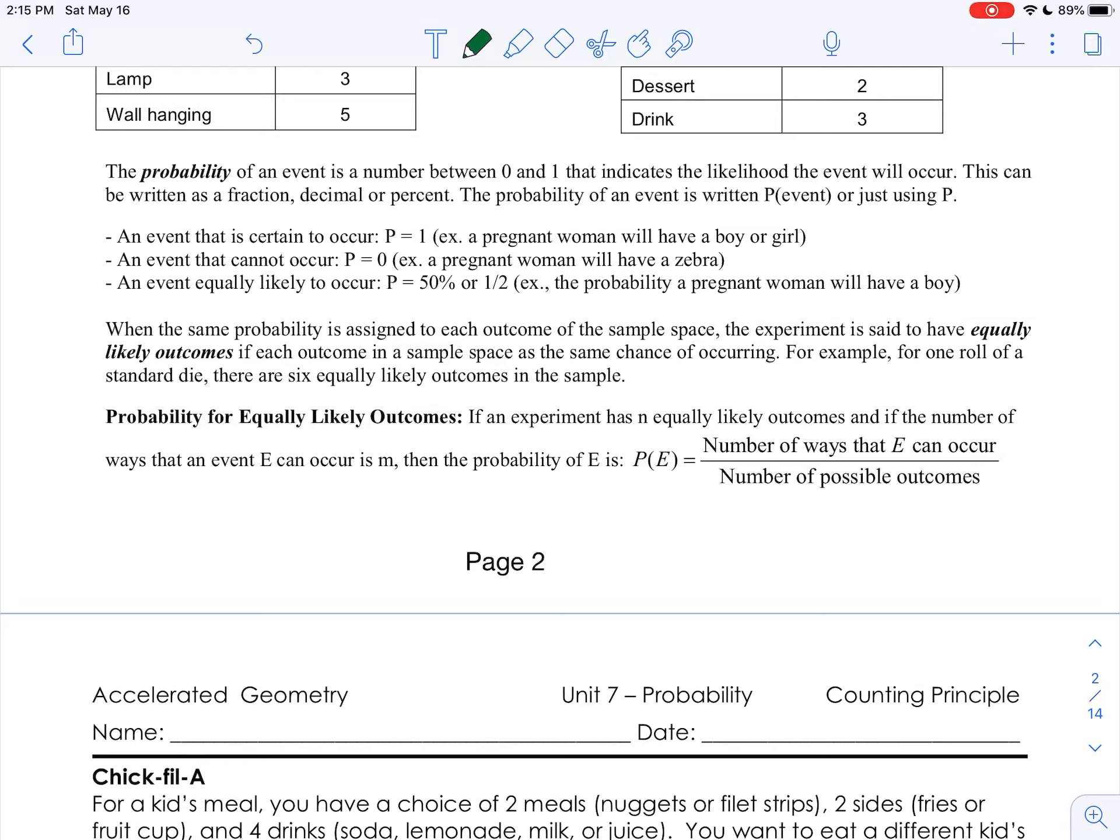And if we're asked for the probability that a 1 is rolled, we would take 1, which is the number of ways that a 1 could be rolled, and divide it by the number of possible outcomes, which is six outcomes possible in that sample space. So 1/6 would be the probability that we roll a 1.